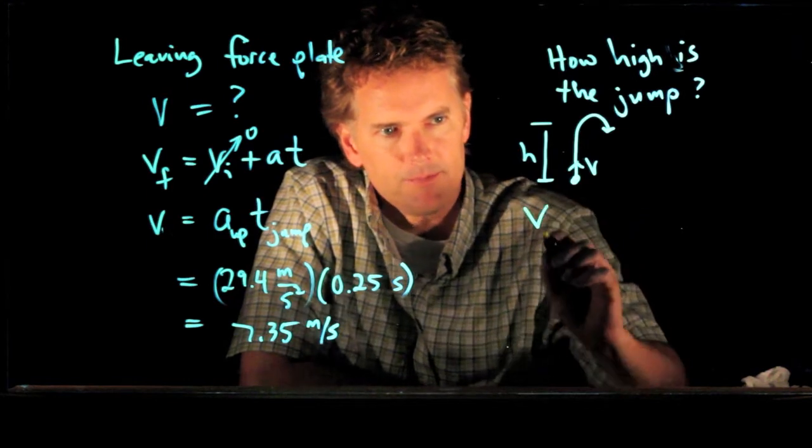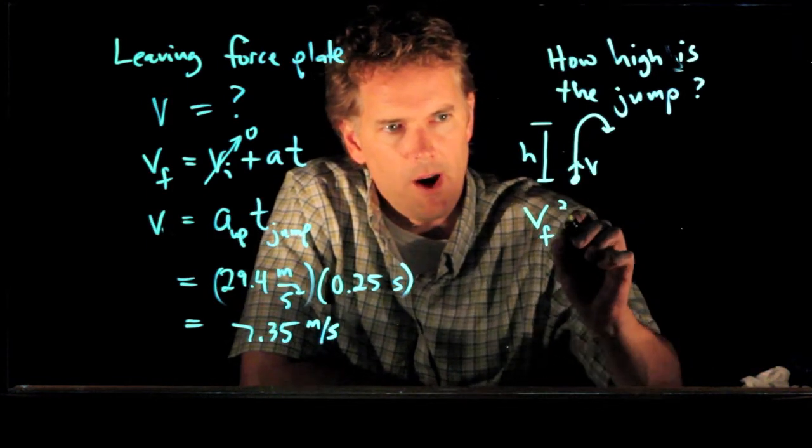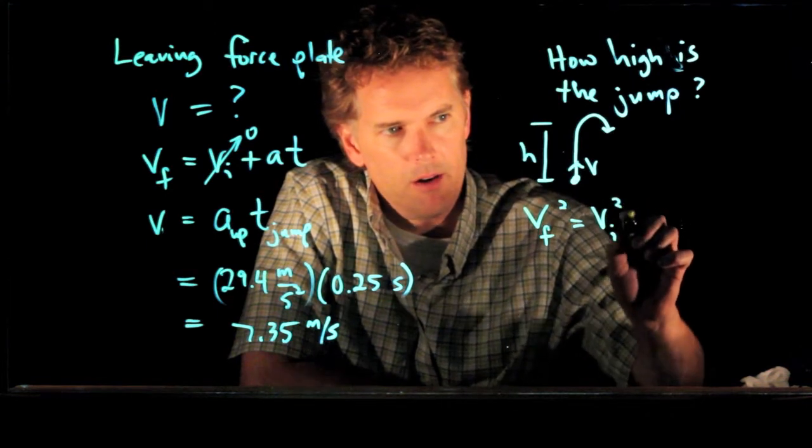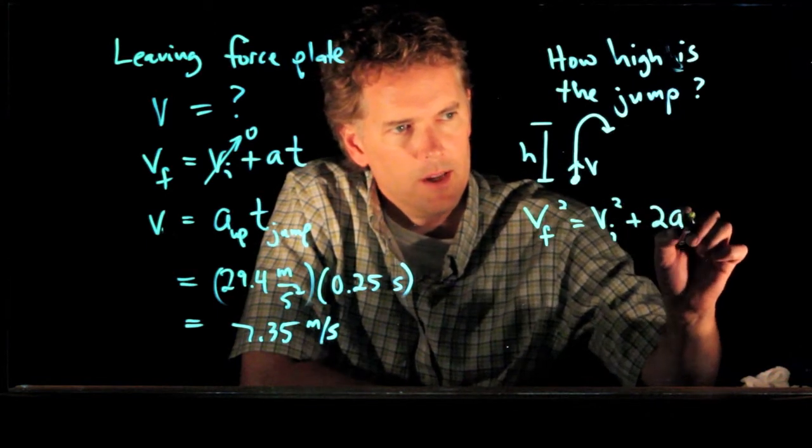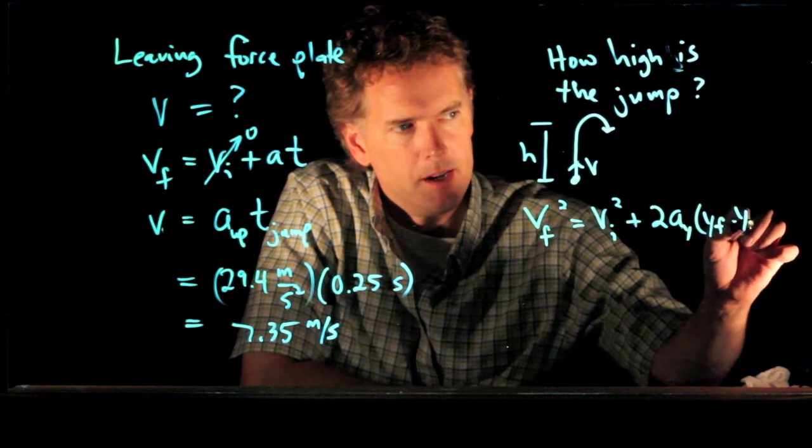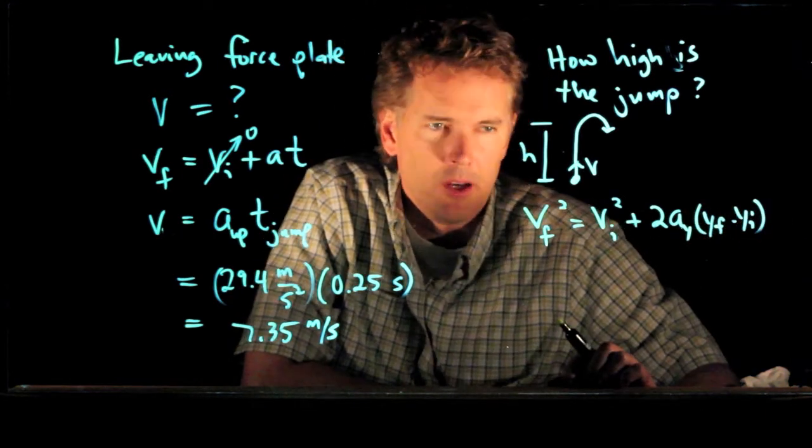Vf squared equals Vi squared plus 2 times the acceleration in the y direction, yf minus yi. That's one of our kinematic equations.